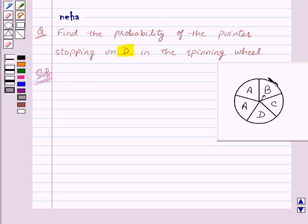Here as you can see that the possible outcomes are A, B, C, D and A again. Therefore, total number of outcomes of the experiment.